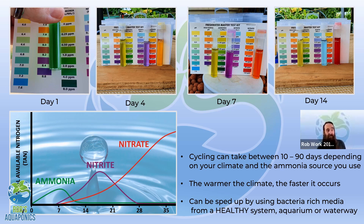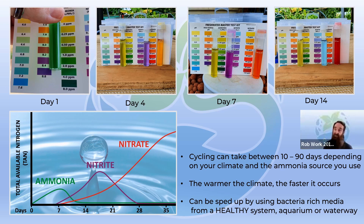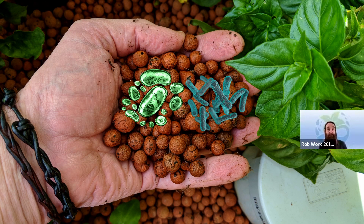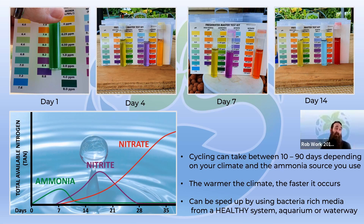Zero nitrite means those bacteria are getting in there and doing their job, and elevated nitrate levels confirmed the system had cycled. This chart gives you an idea of what goes on — a rise in ammonia until the bacteria kick in and oxidize it, then nitrite-oxidizing bacteria raise the nitrate level. Once you see the levels drop right down, your system is pretty much cycled. A great way to kickstart this is to use old media that already has bacteria on it, or filter material from a healthy aquarium.